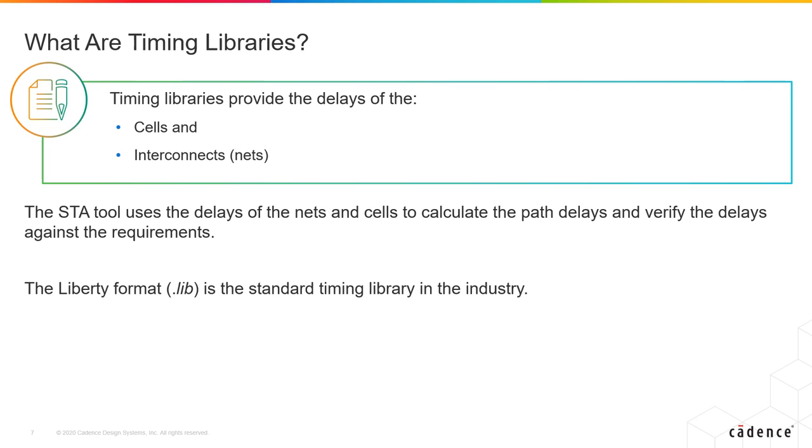The STA tool uses this information to calculate the path delays and then verify these path delays against the constraint requirements that are provided. The standard format that is widely used in the industry is the Liberty format, also known as LIB.